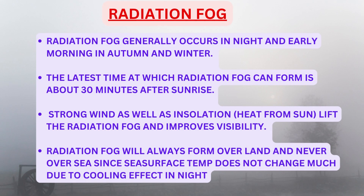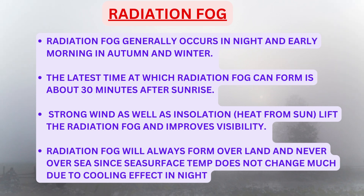Radiation fog generally occurs at night and in early morning in autumn and winter. The latest time at which radiation fog can form is about 30 minutes after sunrise. Strong wind as well as insolation — that is heat from the sun — will lift the radiation fog and improve visibility. Radiation fog will always form over land and never over sea, since the sea surface temperature does not change much due to the high specific heat capacity of water.